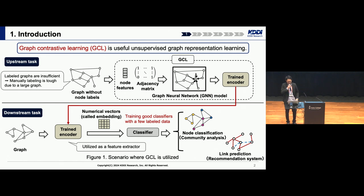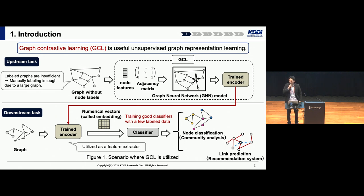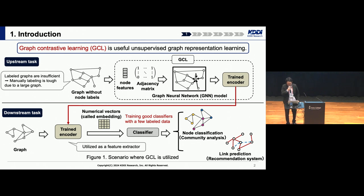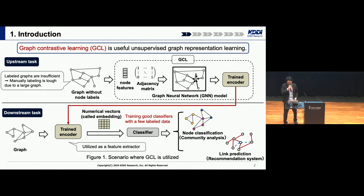Graph Contrastive Learning is a useful unsupervised graph representation learning. In the graph domain, labeled data are insufficient in quantity. In response to such a situation, GCL is proposed. GCL tries to train an encoder only with node features and adjacency matrices. The trained encoder can be utilized as a feature extractor in downstream tasks. It converts information about nodes into numerical vectors called embeddings, allowing practitioners to train good classifiers with only a few labeled data, realizing various tasks.